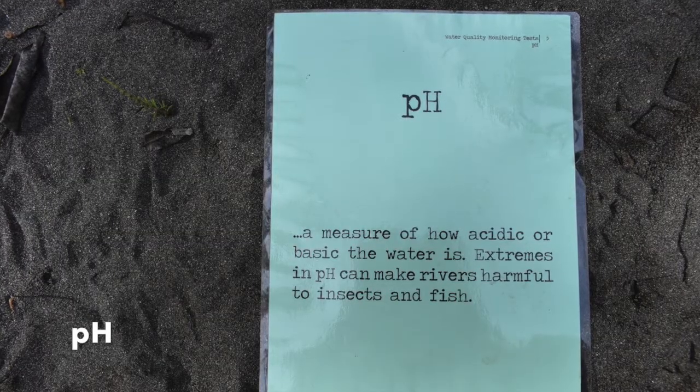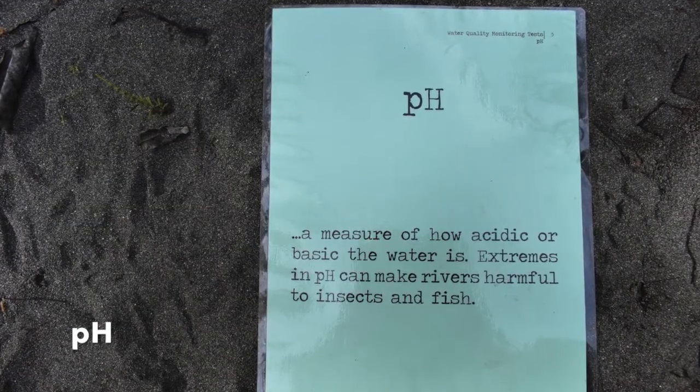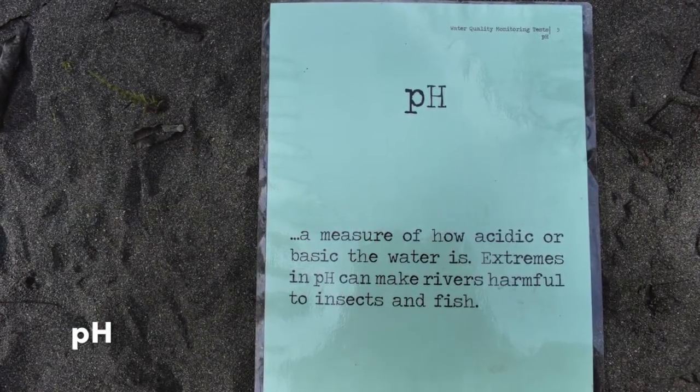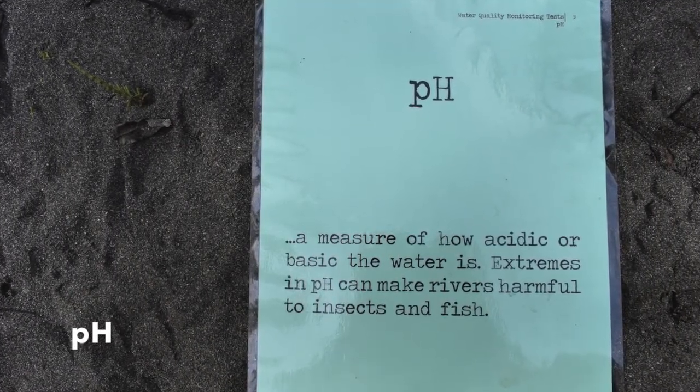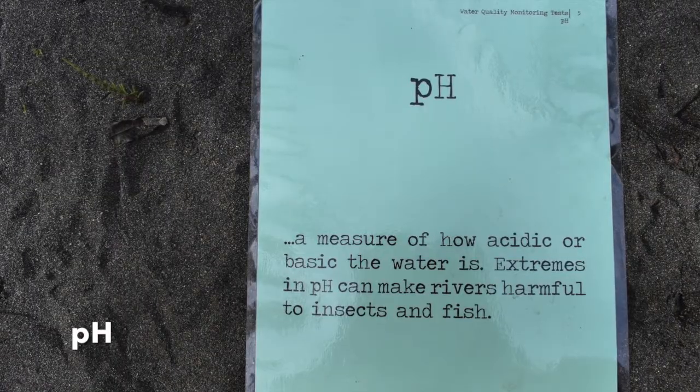The first test we will perform is pH, which is a measure of how acidic or basic the water is. Salmon and other aquatic animals like a neutral pH between 7 and 8 pH units.